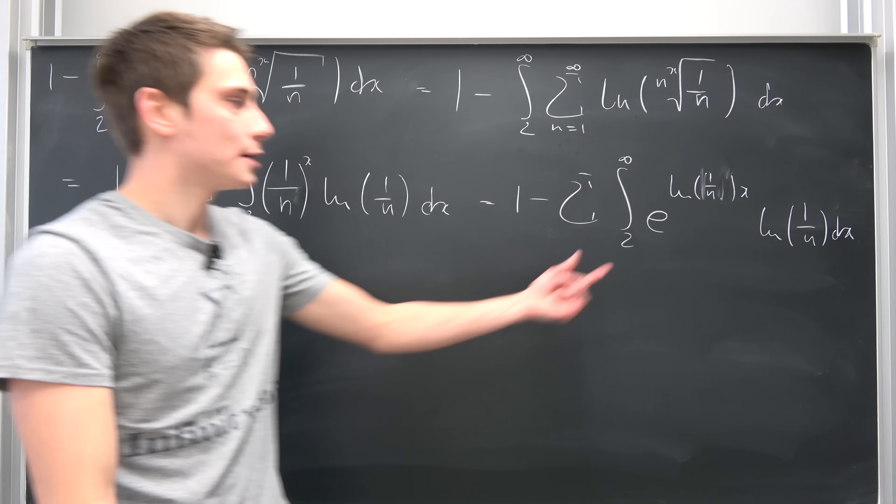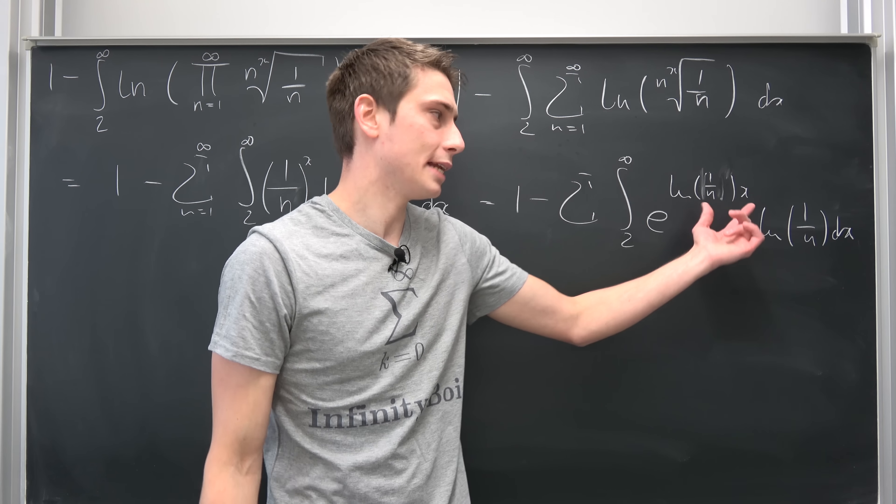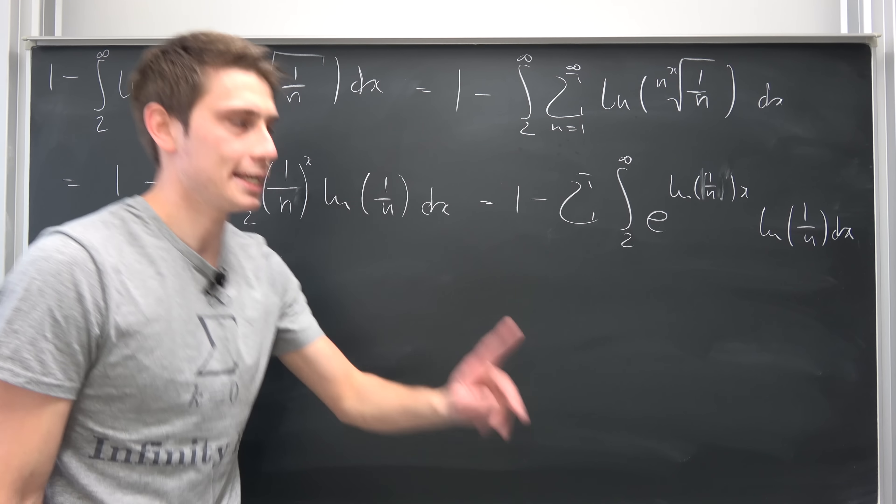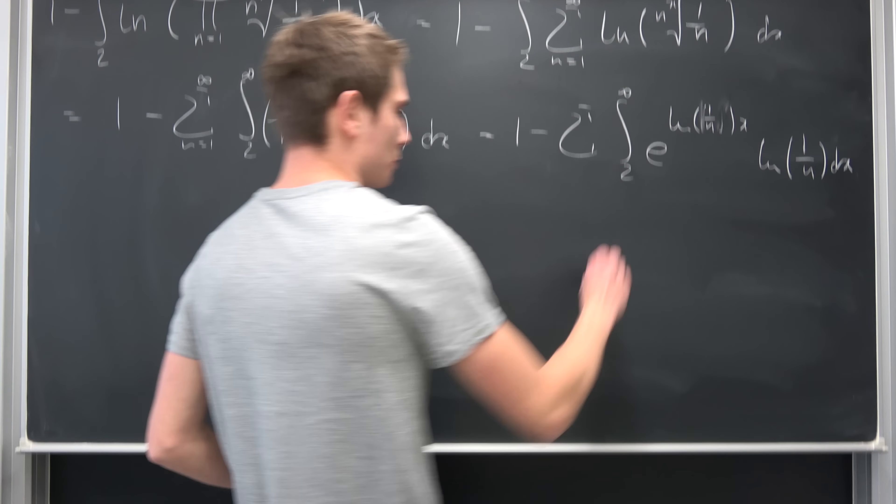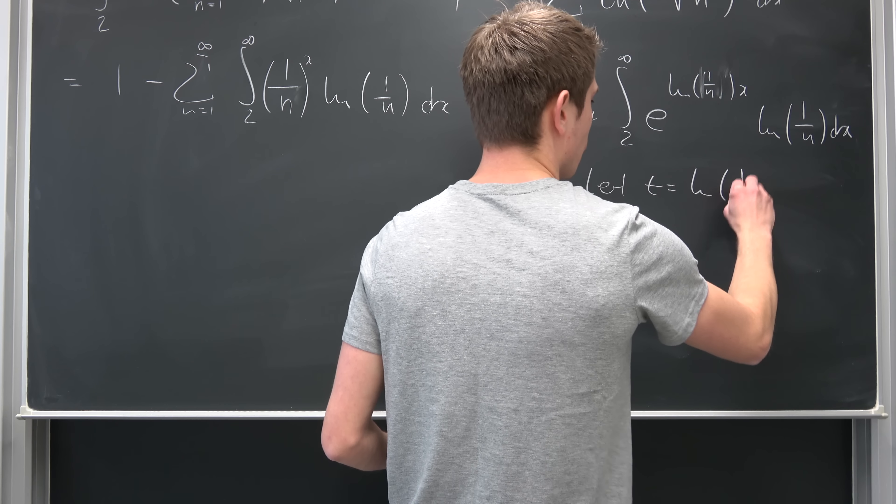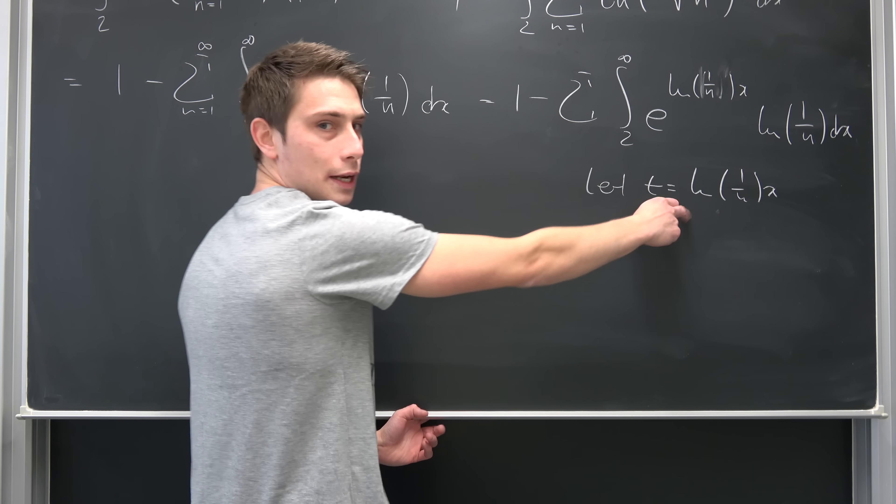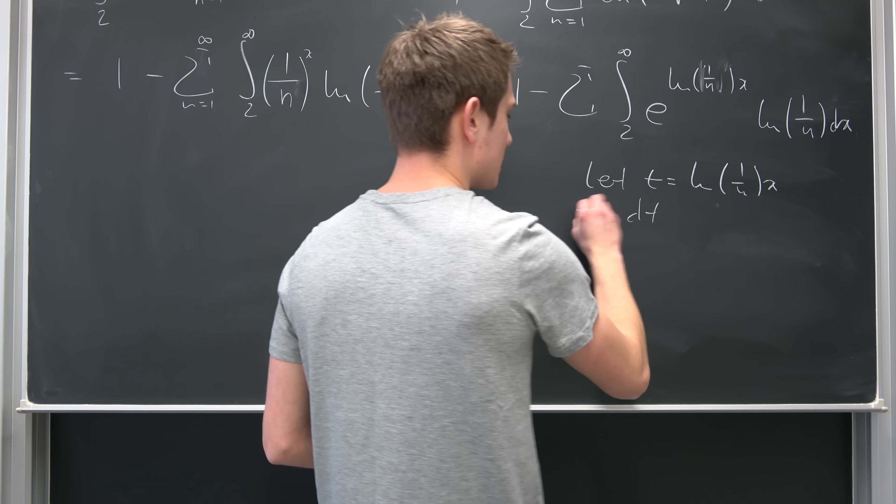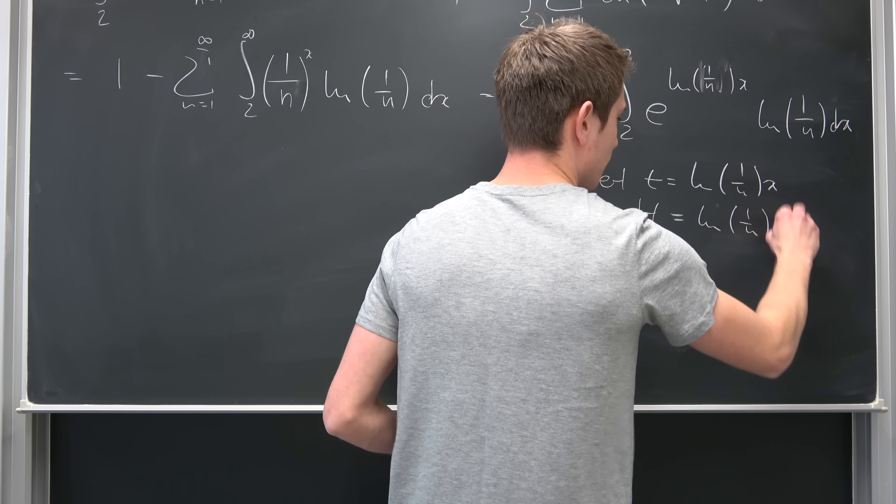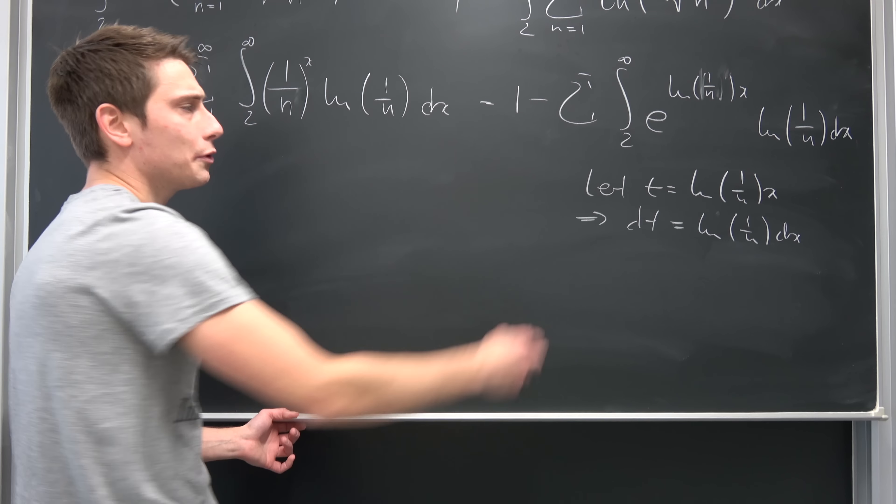And here's the really nice part. Okay, so we have ln of 1 over n times x, and we have ln of 1 over n times dx, meaning we can introduce a certain substitution. So let t be equal to the natural log of 1 over n times x. If we differentiate that, that also means that dt is nothing but the natural log of 1 over n times dx.